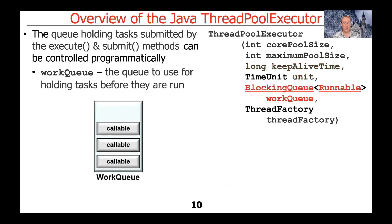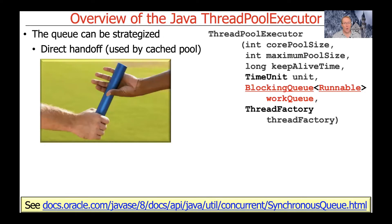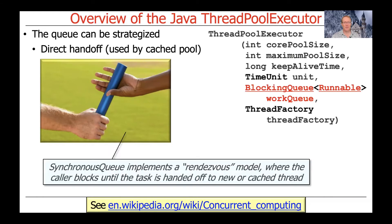There's also a work queue parameter — a blocking queue used to hold tasks before they're actually used by the threads in the pool. There are several blocking queue implementations that come out of the box. One type is called a synchronous queue, which isn't really a queue at all — it's used for direct handoffs. This is used by the cached thread pool implementation. The synchronous queue checks to see if there are any idle threads in the pool and, if so, hands off the work to one of them. If there are no idle threads, the synchronous queue spawns a new thread.